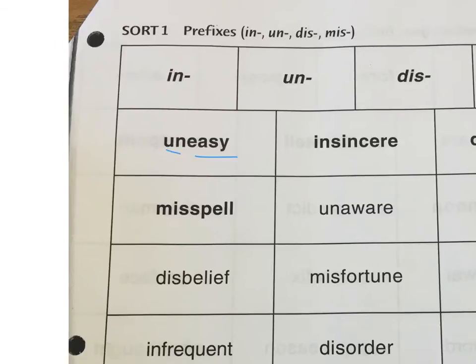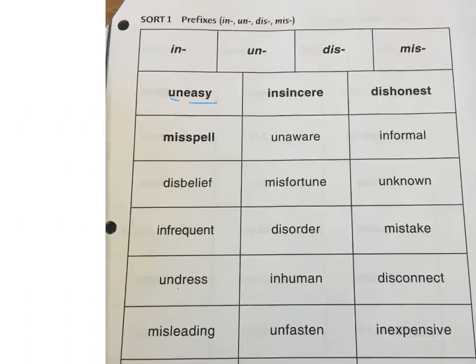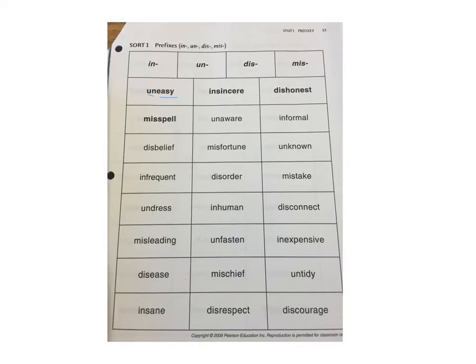What you want to do is just sort these words into where they go based on their prefix. So is it like insincere going into the in column? Or is it dishonest going into the dis column? Or misspell going into the mis column? Note misspell. This is commonly misspelled because people don't put one S in it. But if you think the prefix mis has an S and then the word spell has an S, you need two S's there in misspell.